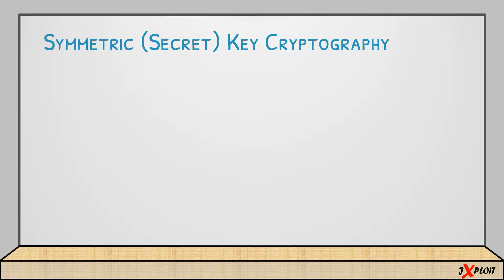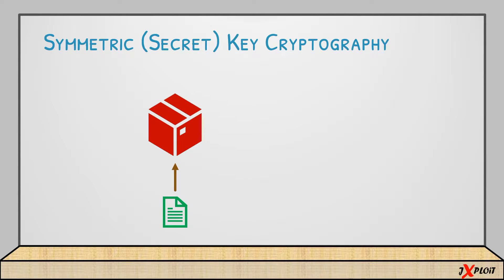Let's start with an example to get a clear picture of symmetric key cryptography. Suppose there is a box and I'm going to keep some of my confidential files inside that box. Once I keep all those files inside, I'm going to lock it with a key, because I want to keep all my files secure and prevent unauthorized access to those files.